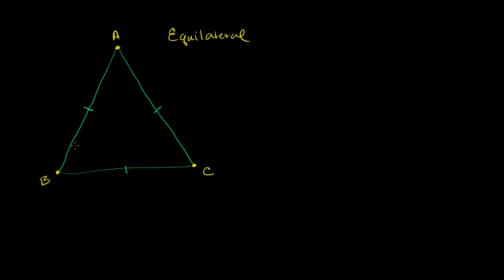Let's think about how we can do this. We know that AB is equal to AC. So let's just pretend that we don't even know that this also happens to be equal to BC. We know for isosceles triangles, if two legs have the same length, then the base angles have the same length.